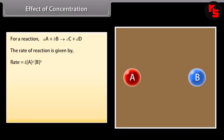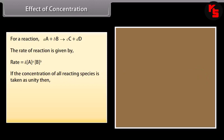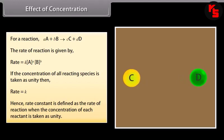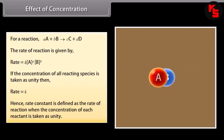For the given reaction, rate = K[A]^a[B]^b. If the concentration of all reacting species is taken as unity, then rate = K. Hence, rate constant is defined as the rate of a reaction when the concentration of each reactant is taken as unity.